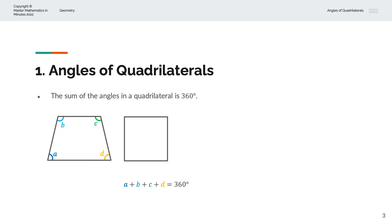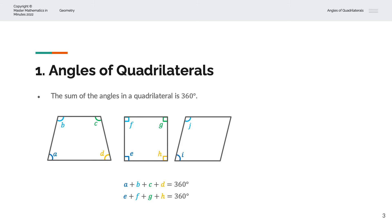The next example is a square, with angles E, F, G, H. And the sum of these angles is also 360 degrees. The next example is a rhombus, with angles I, J, K, L. And the sum of these angles is also 360 degrees.